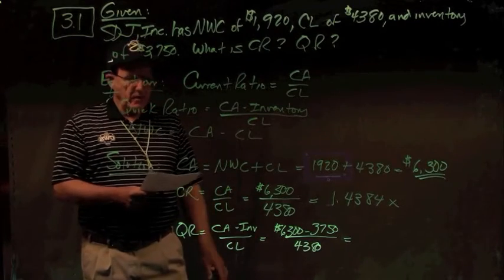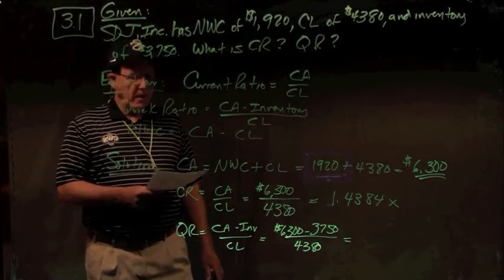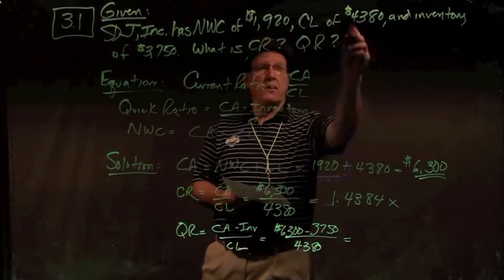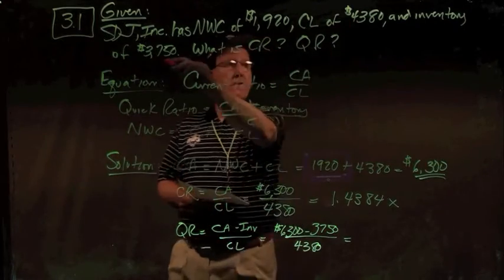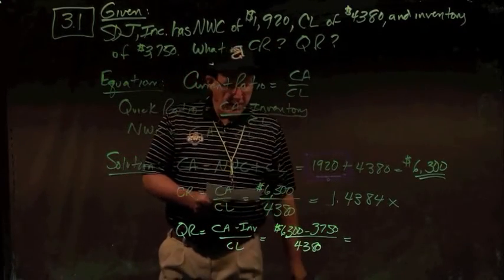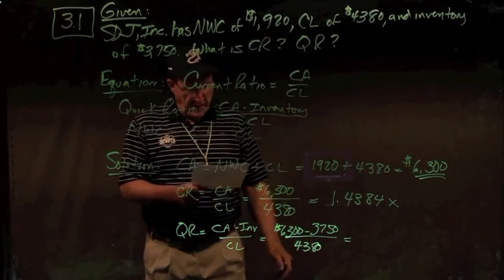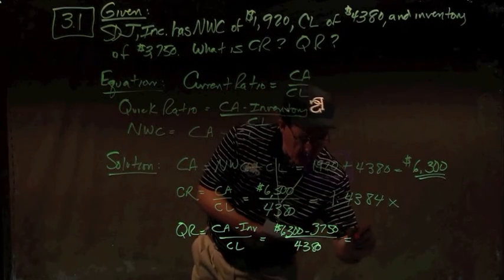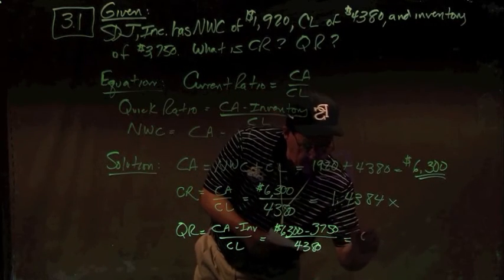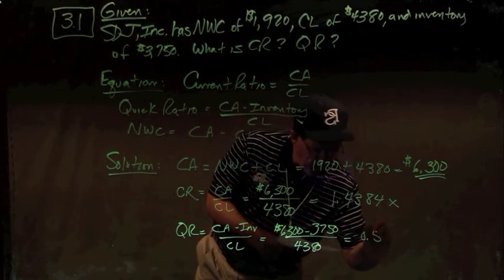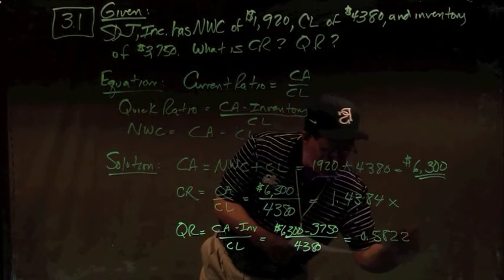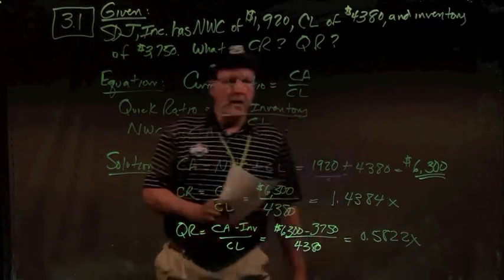For the quick ratio, current assets minus inventory: $6,300 minus our $3,750 of inventory, divided by current liabilities of $4,380, and for the quick ratio we get 0.5822 times. And there are your answers for problem number 1.